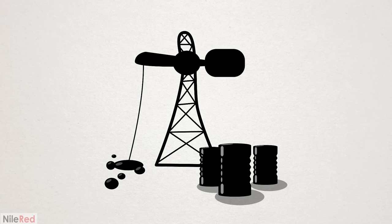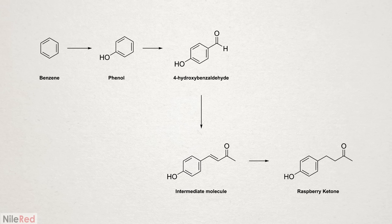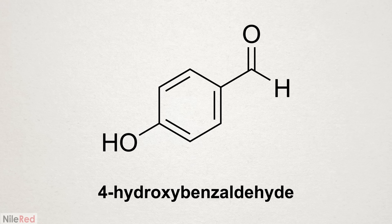For raspberry ketone this seems to be the common pathway. It starts with benzene derived from crude oil and with every step the raspberry ketone molecule is slowly put together. This is a long and labor intensive process though, and when producing it industrially nobody is going to be starting with benzene. They'll start with the cheapest mass produced precursor closest to the final molecule. In this case it's often 4-hydroxybenzaldehyde so that's what I'm going to be starting with.